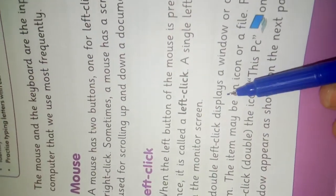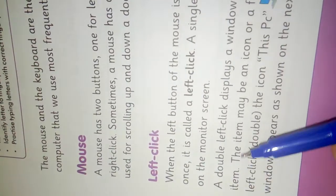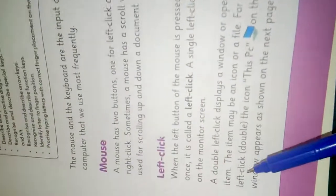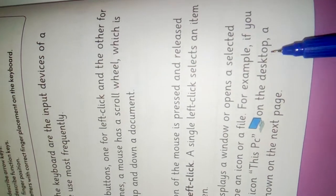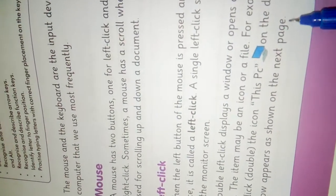The items may be an icon or a file. For example, if you double left-click the icon This PC on the desktop, a window appears as shown on the next page.